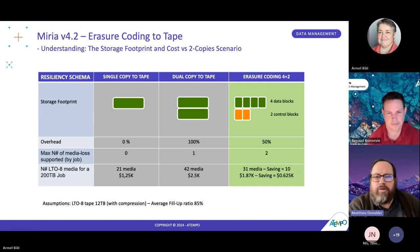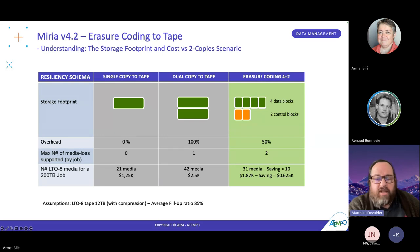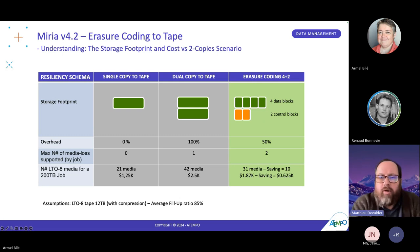Thank you, Armel — with pleasure, and good day everyone. So we're covering erasure coding to tape. Here is a little chart that will explain, I hope clearly, one of the main benefits: the storage footprint. If we take on the left a single copy to tape, we've got one footprint. When you want a dual copy to tape, you will multiply by two this footprint and you can write to tape in a wide scheme — for example, two data centers with a tape library within each of them.